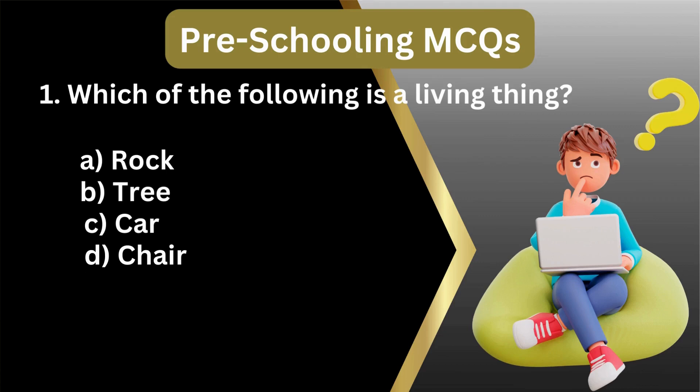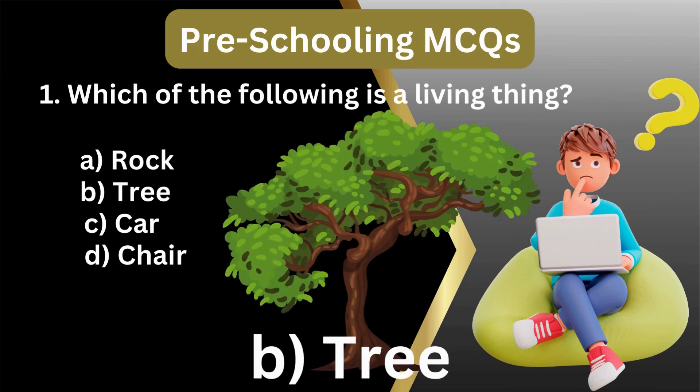1. Which of the following is a living thing? A. Rock, tree, card, chair. Answer: B. Tree.